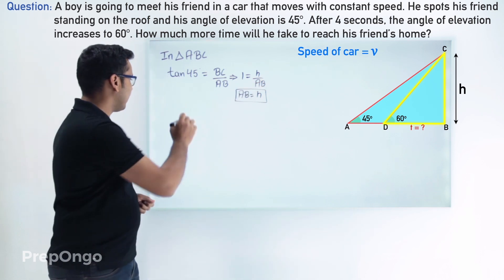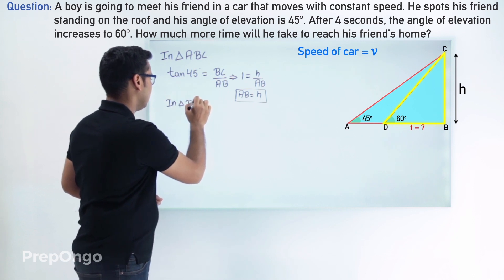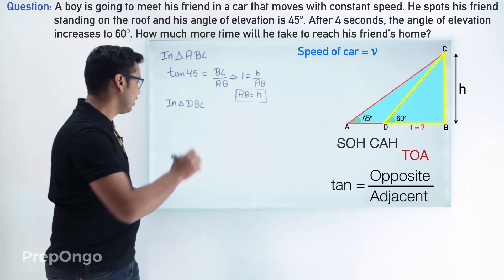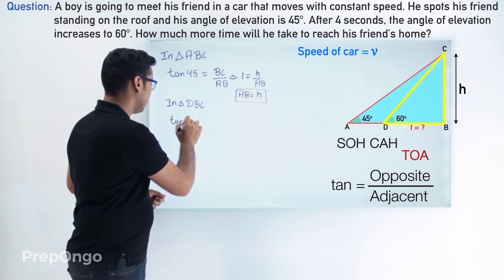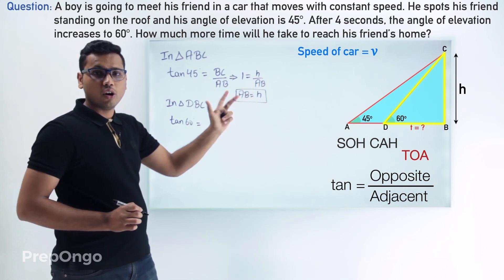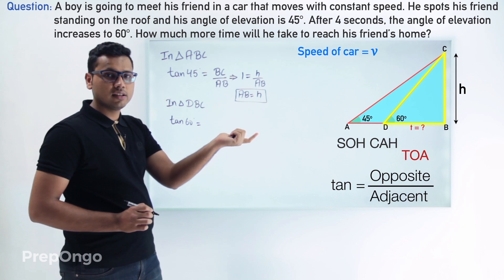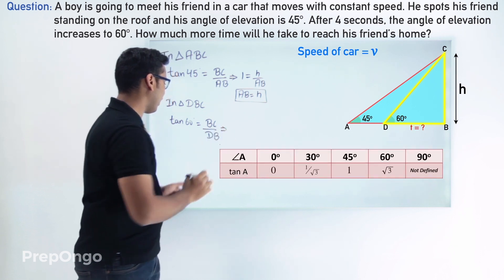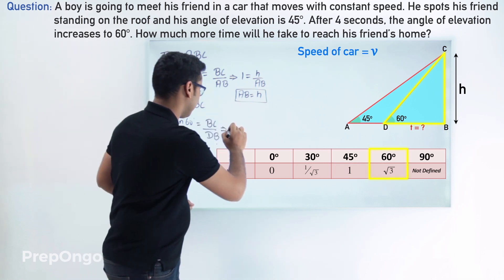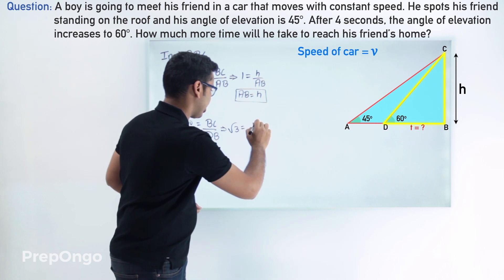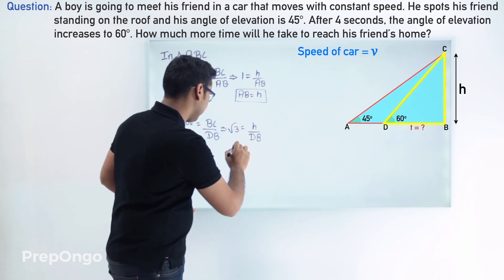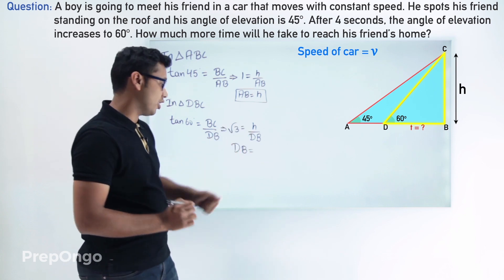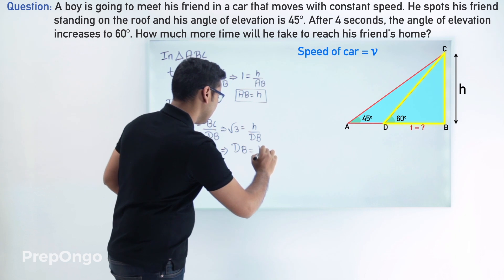Similarly, applying trigonometric ratios in triangle DBC: using TOA, tan of 60 degrees equals BC upon DB, which is H upon DB. The value of tan 60° from the table is √3, so √3 equals H upon DB. Cross-multiplying, DB equals H upon √3.